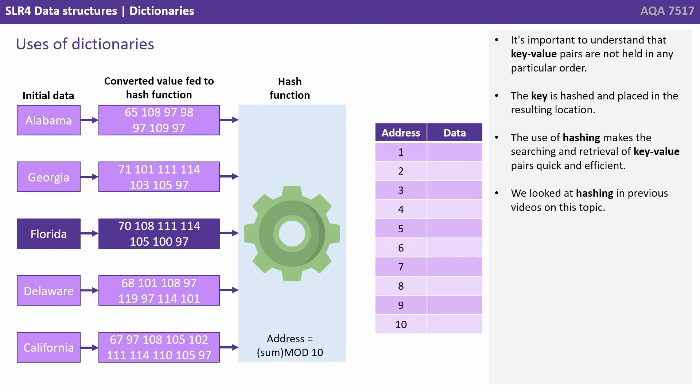It's important to understand that key-value pairs are not held in any particular order. The key is hashed and placed in the resulting location. The use of hashing makes the searching and retrieval of key-value pairs quick and efficient. And we looked at hashing in the previous video on this topic.